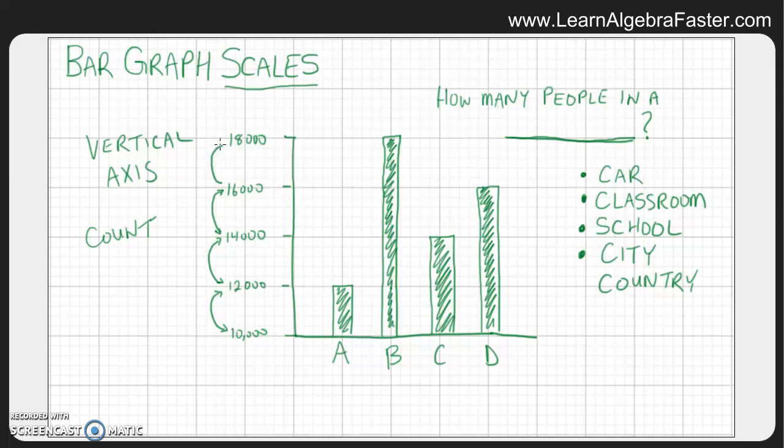Now the scales can change depending on what the data says. You always want to make sure that your top number is greater than or equal to your tallest bar. And you want to make sure that your minimum number is equal to or smaller than your shortest bar. Now, last but not least, let's do how many people in a country.